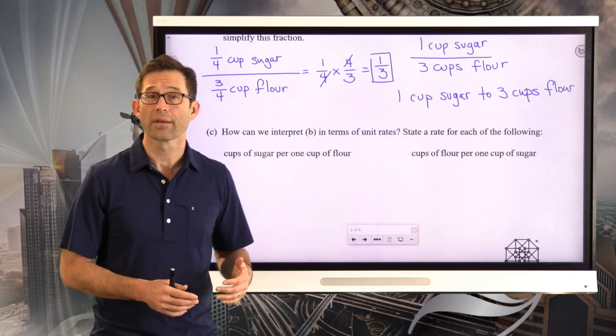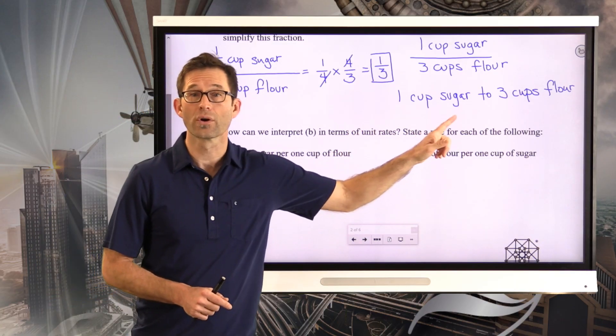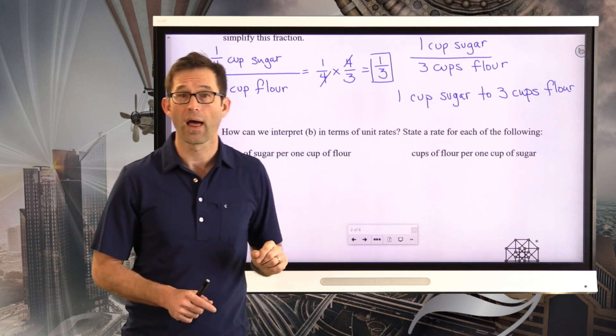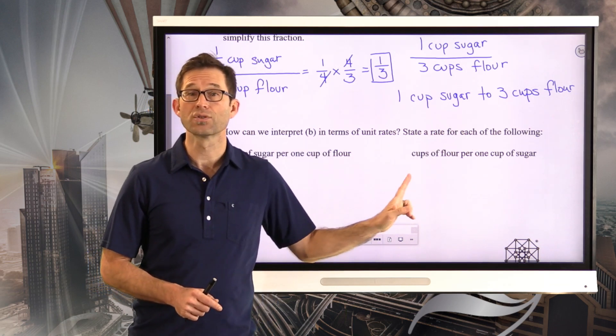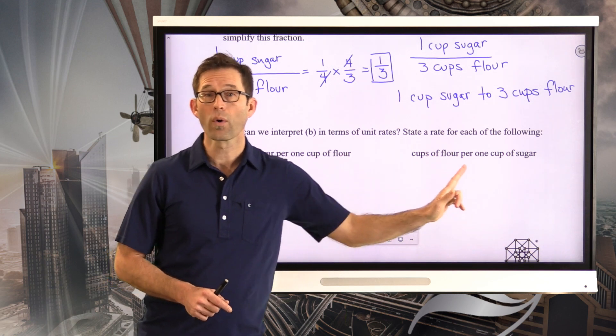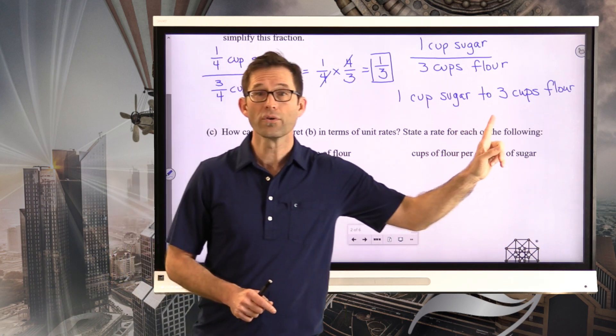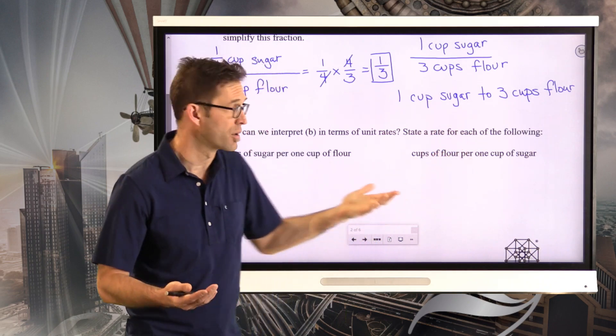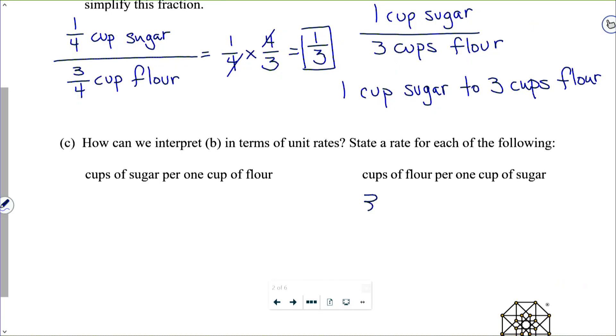All right. Well, the plain fact is our ratio is one cup sugar to three cups flour. That actually immediately tells us the answer to this one. Cups of flour per one cup of sugar per one cup of sugar. There it is. Three cups flour per one cup of sugar.